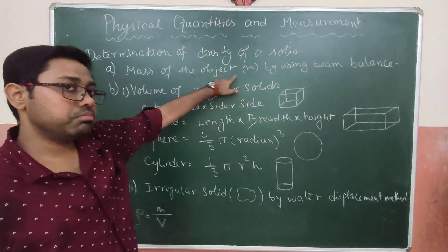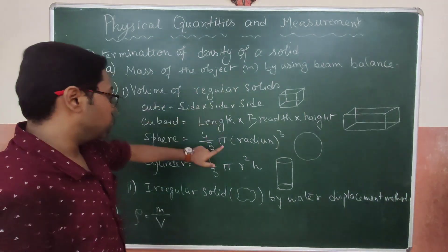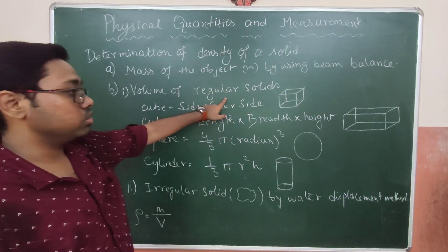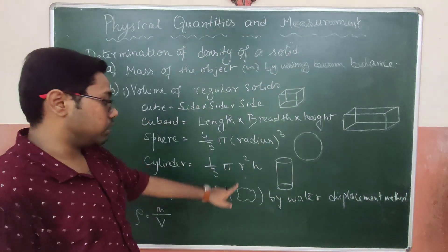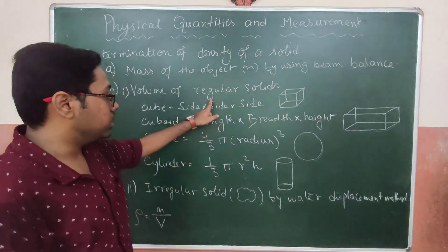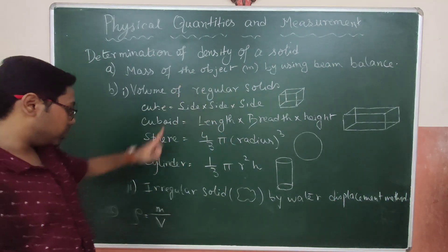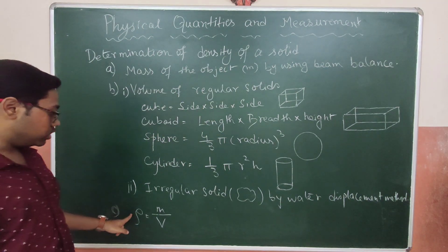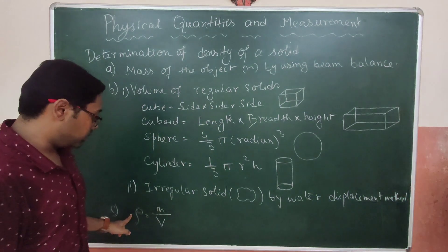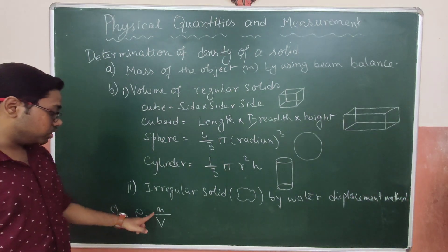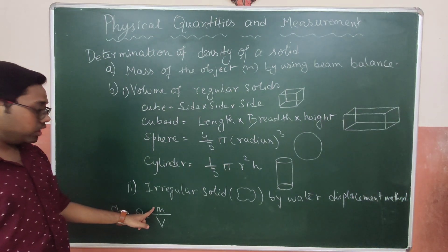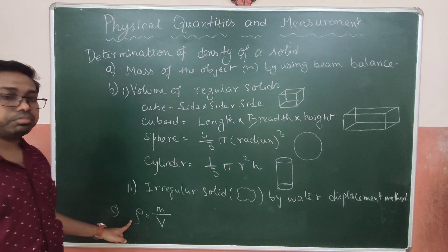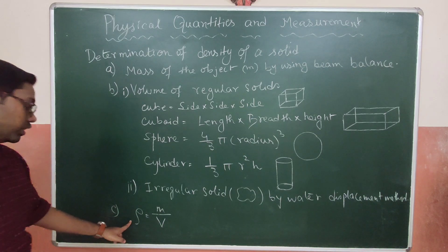So first we find the mass, then we find the volume — sometimes by using a formula and sometimes by using the water displacement method. Then we put both values into the density formula: density equals mass divided by volume. We divide mass by volume to easily get the value of density.